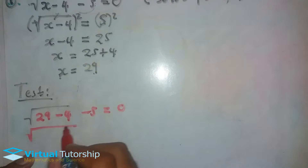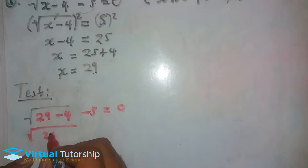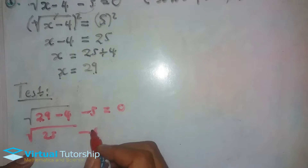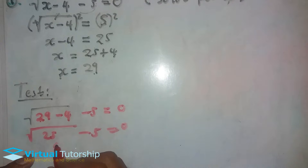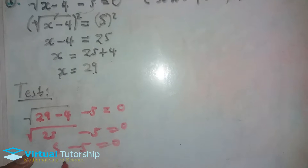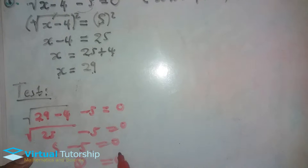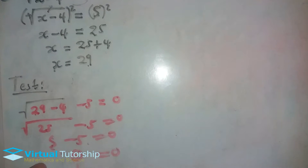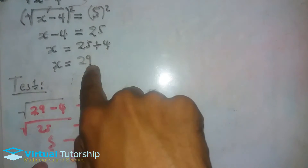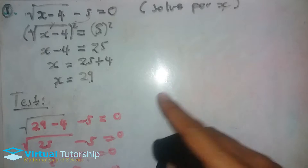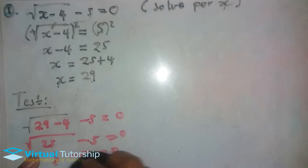Now let's test the solution. We substitute x equals 29 back into the original equation: square root of (29 minus 4), minus 5, equals zero. That's the square root of 25, minus 5. The square root of 25 is 5, so 5 minus 5 equals 0. The left-hand side equals the right-hand side, so x equals 29 is the answer.